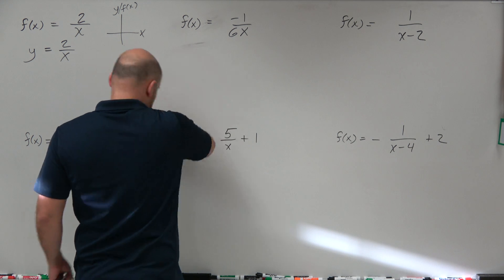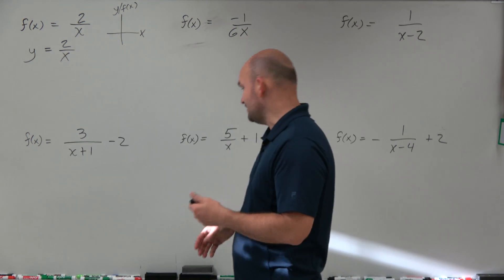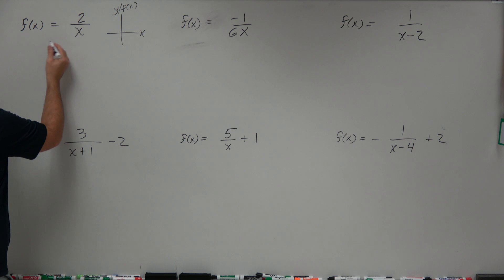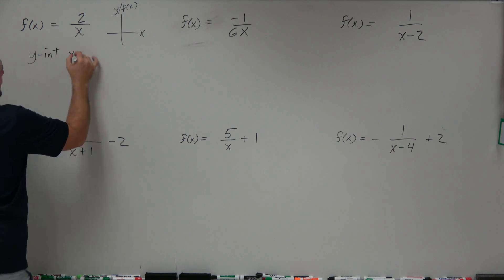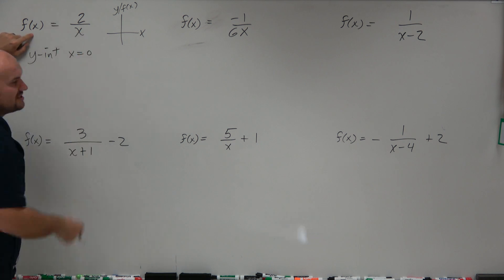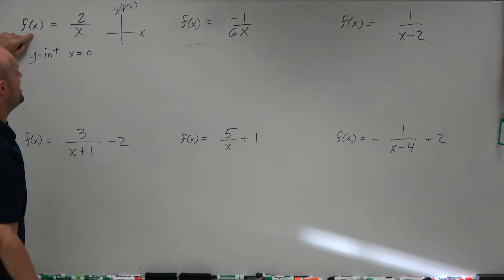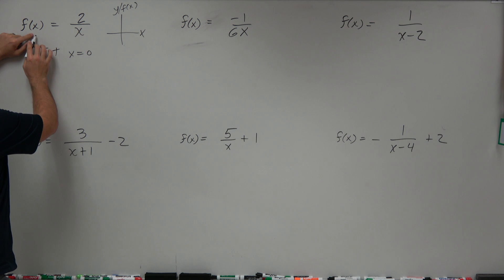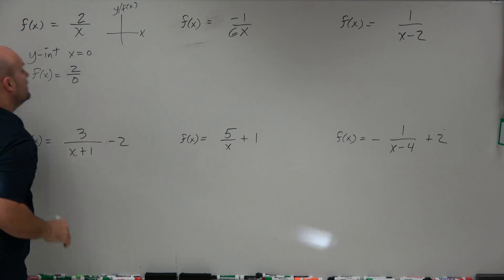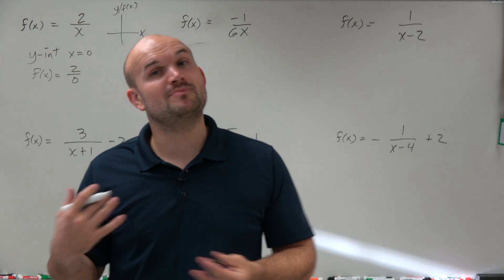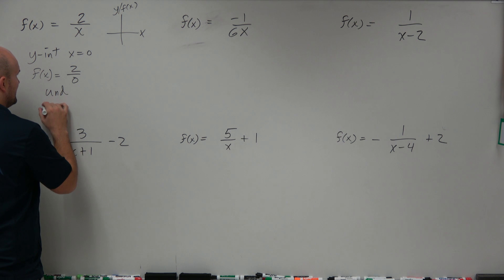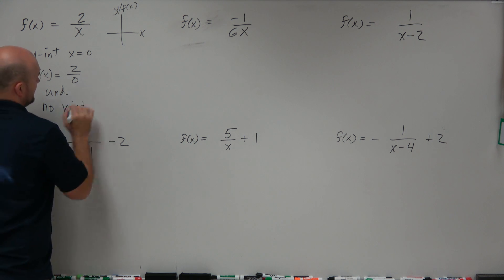For the y-intercept, x equals 0. We're using f of x here instead of y, but it doesn't really matter. So we set x equal to 0: f of x equals 2 over 0. We cannot divide 2 by 0, so therefore it's undefined. When we have an intercept that's undefined, there is no y-intercept.